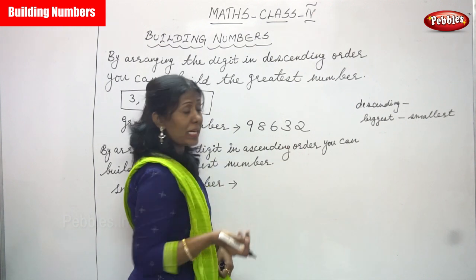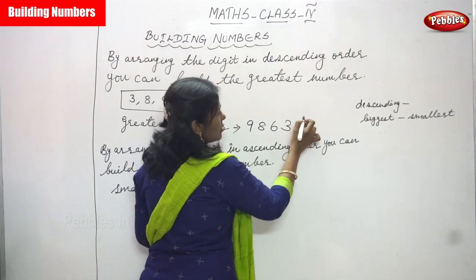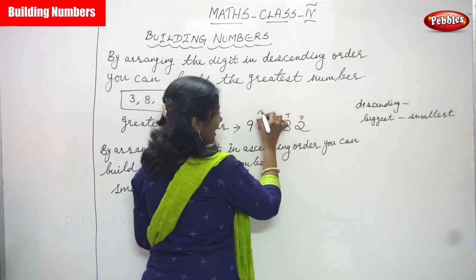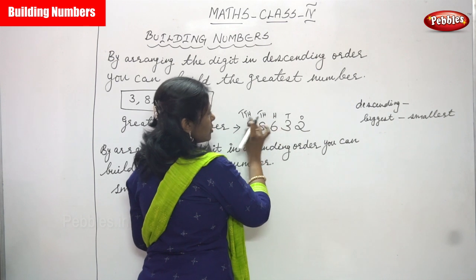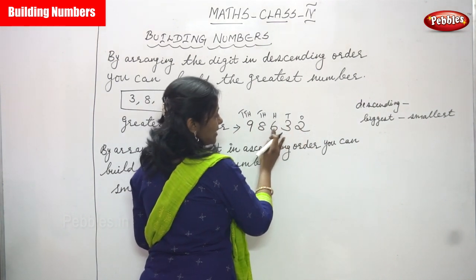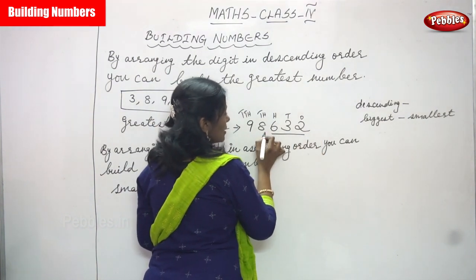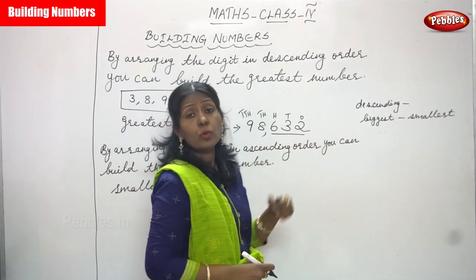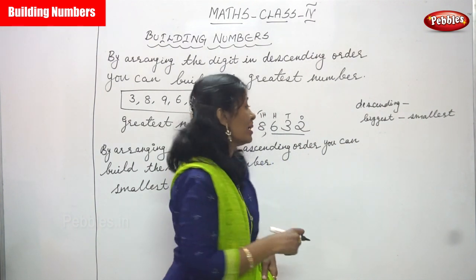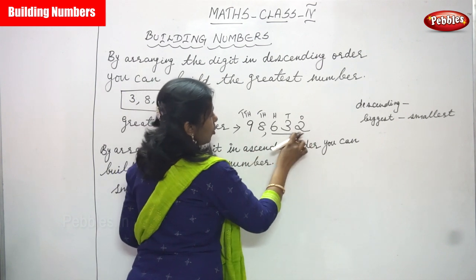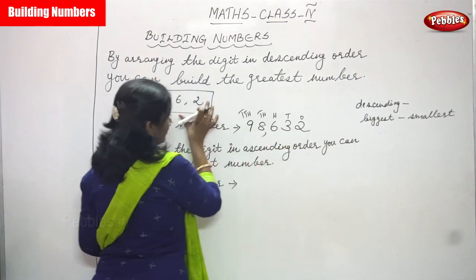So the number is nine, eight, six, three, two. We pronounce the place values: ones, tens, hundreds, thousands, ten thousands. Leave the last three digits, then you use a comma. After the three digits, use a comma for every two digits. So the number is ninety-eight thousand six hundred and thirty-two.